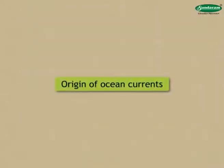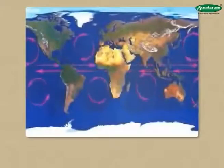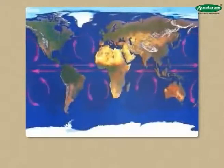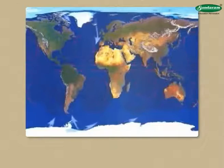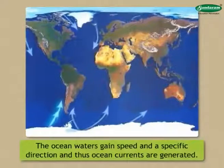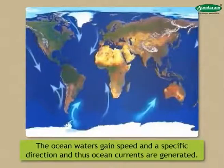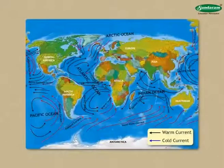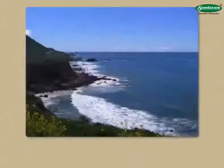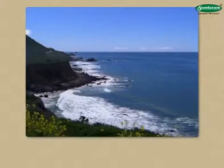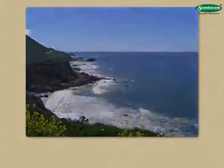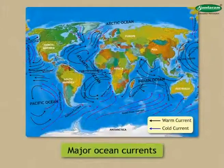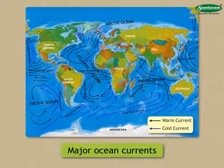The regularly operating planetary winds brush against the ocean surface and drag the ocean water along with them. This makes the ocean waters gain speed and a specific direction, and thus ocean currents are generated. On a global scale, almost all ocean currents flow in the direction of the planetary winds. However, their directions can get modified in response to the nature of the coastlines. The major ocean currents from different oceans are shown in the figure — study these and note the names and directions of these currents.